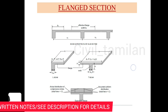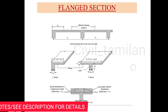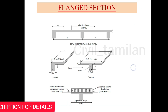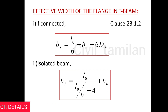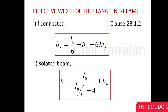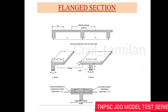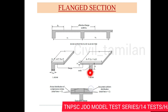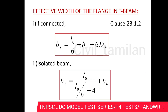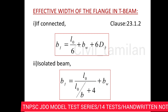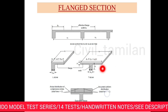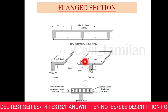Now, the flange section — T-beam or L-beam. If you look at the slab board, this beam is connected. There are provisions here. Effective width of the flange in T-beam: if there is a flange, the top portion is the flange and the center portion is the web. If there is an effective width of the flange, we call it the effective width.